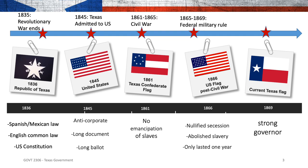Then in 1869, after federal military rule was over and Texas was back to making its own constitutions, the state instituted the Constitution of 1869, which centralized power in a strong governor and put a lot of power and decision-making ability in that office.